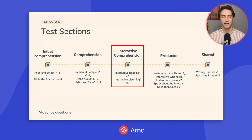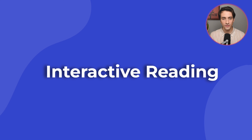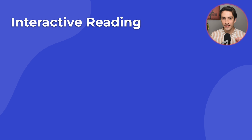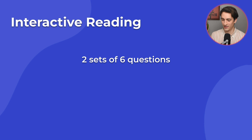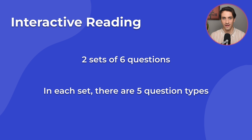The next section is Interactive Comprehension. This section is a little more complicated than the others, so be sure to pay attention. First, you will have Interactive Reading. An Interactive Reading consists of two sets of six questions each, and within each set, there are five question types.